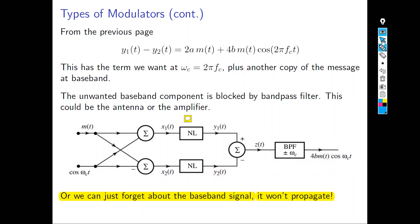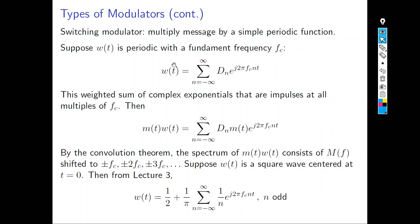The next type is the switching modulator. It multiplies the message by a simple periodic function w(t) with fundamental frequency fc. w(t) can be expressed as a weighted sum of complex exponentials: w(t) = Σ dₙ·e^(j2πfc·n·t). Multiplying your message signal by this series places copies of the message at fc, 2fc, 3fc, etc. You then filter around any desired frequency to get your modulated signal.